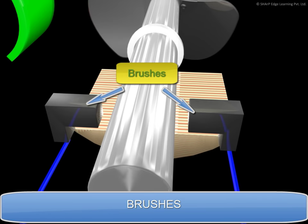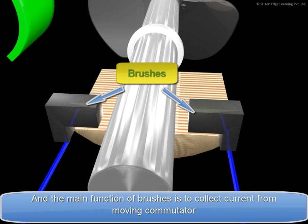Brushes. They are usually made of carbon or graphite. And the main function of brushes is to collect current from moving commutator.